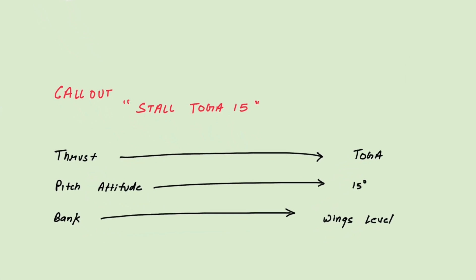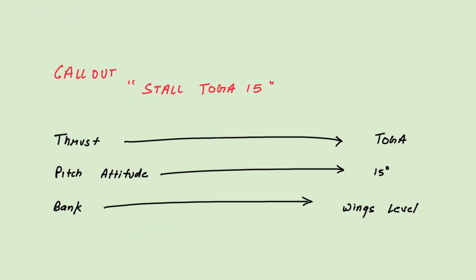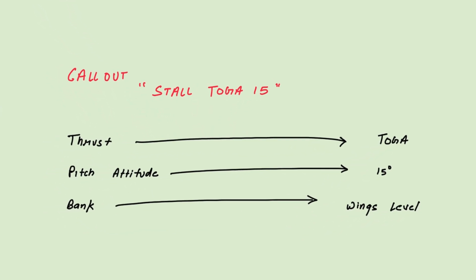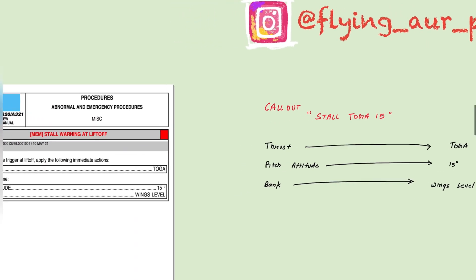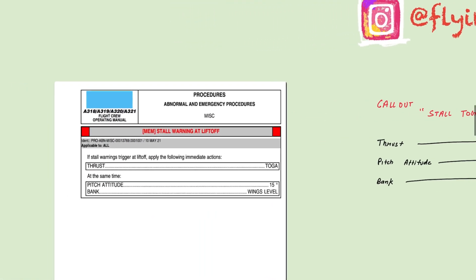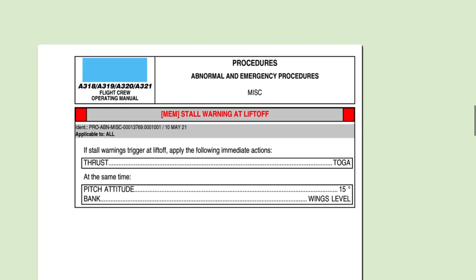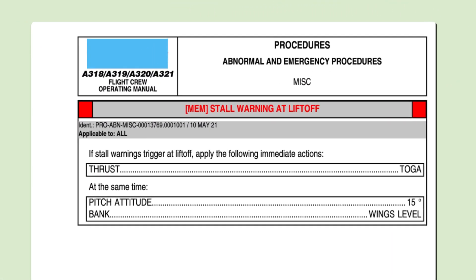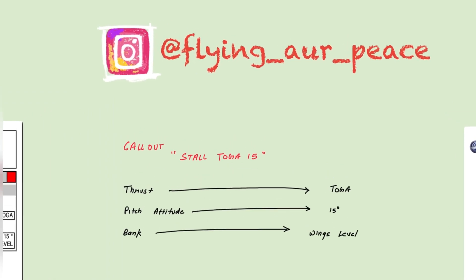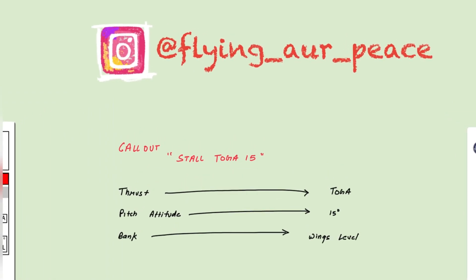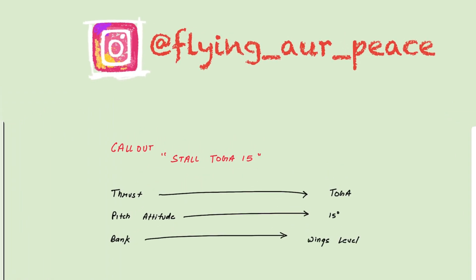This is the easiest memory item out of the ten, because its callout tells you what actions you need to take. The callout is 'stall TOGA 15' — it's telling you to use TOGA thrust and 15 degrees pitch.